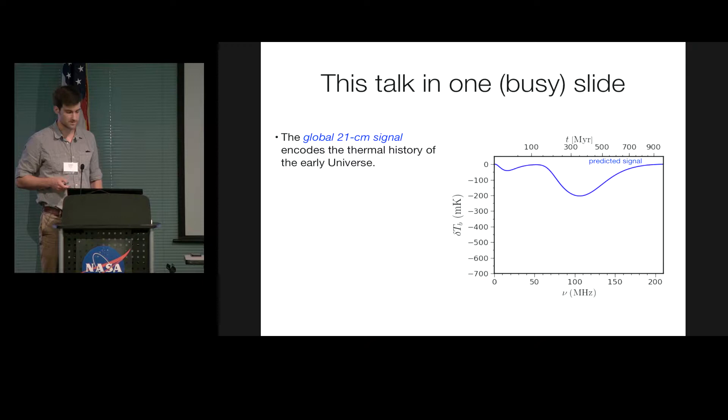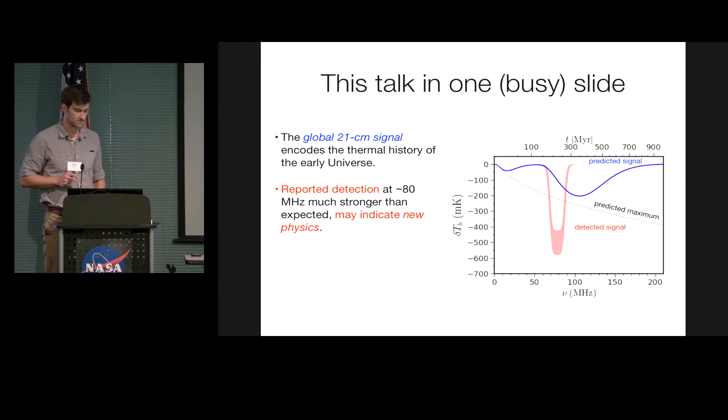And one prediction for the signal is shown in blue at the right. Now, recently, the first reported detection of the signal was announced, of a signal at 80 megahertz. And while this is roughly in the right ballpark of what we were expecting, the signal is more than twice as large as we thought it should be. And that's not really a shortcoming of an imagination. It's really twice as strong as the maximum allowed amplitude that we thought the signal could take on.